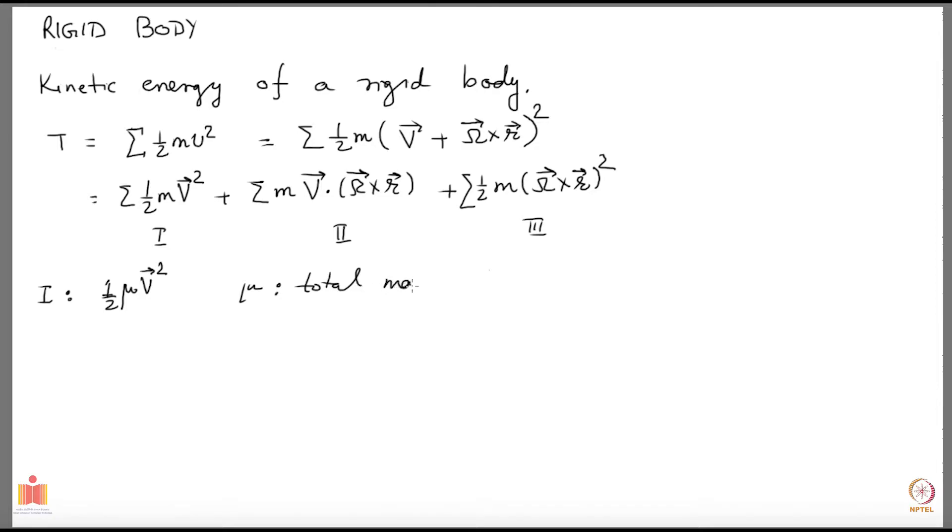Then look at the second term. Here you have capital V and capital omega which can come out of the summation because they are independent of which point you are talking about in the rigid body. But r is the coordinate of the points and the summation runs over it. So that one I cannot take out. What I will do is I will play around a bit with this dot and cross products and try to see if I can do something.